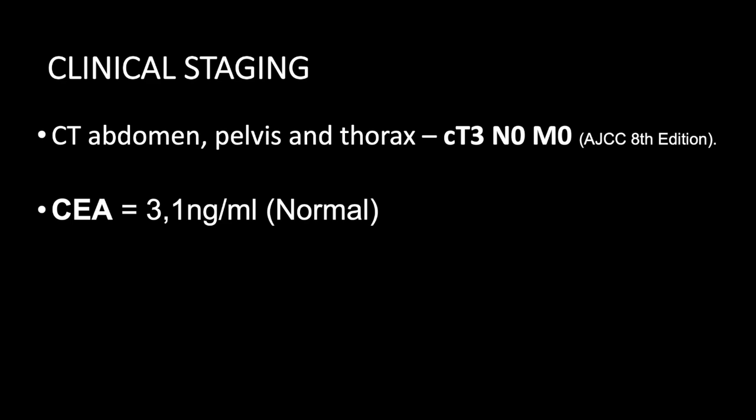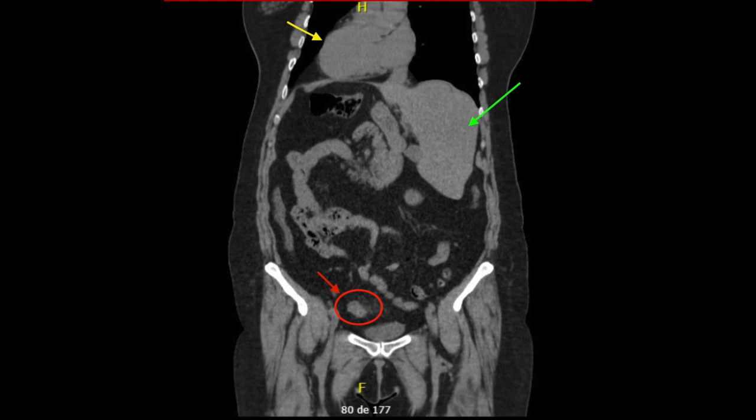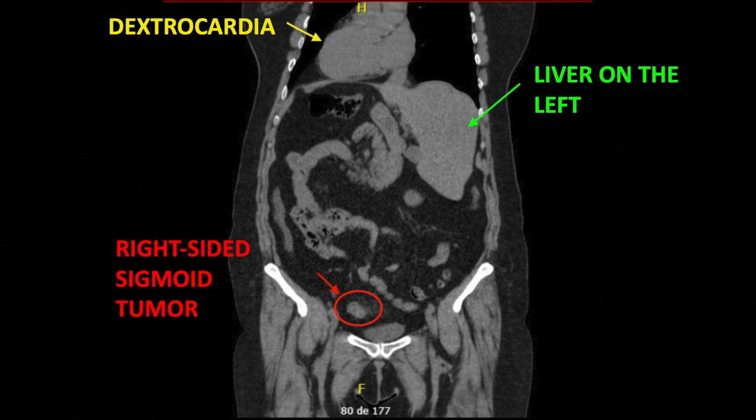We now see a CT scan in coronal section revealing situs inversus totalis, demonstrating dextrocardia, the liver on the left, and a tumor in the sigmoid colon on the right side of the patient.